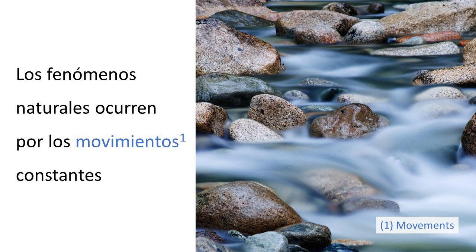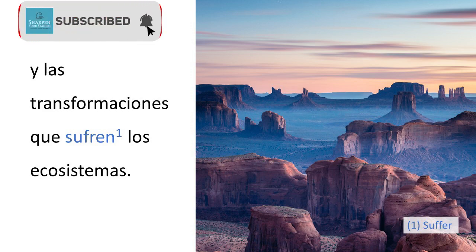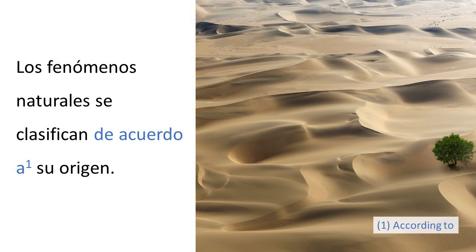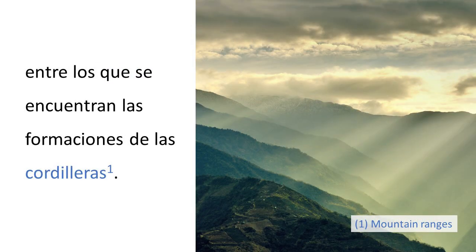Los fenómenos naturales ocurren por los movimientos constantes y las transformaciones que sufren los ecosistemas. Los fenómenos naturales se clasifican de acuerdo a su origen. Algunos tipos de fenómenos naturales son los geológicos, entre los que se encuentran las formaciones de las cordilleras.